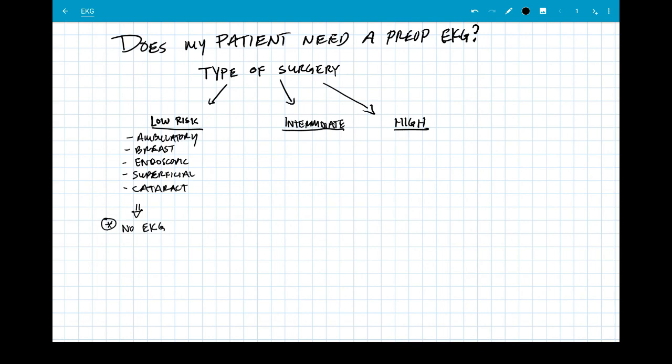Next, if you have an intermediate surgery, you should review the patient's revised cardiac risk index and other things of the patient's history. Things important in the patient's history are history of coronary artery disease, history of peripheral arterial disease, history of cerebral vascular disease, a history of structural heart disease, and any history of arrhythmia.